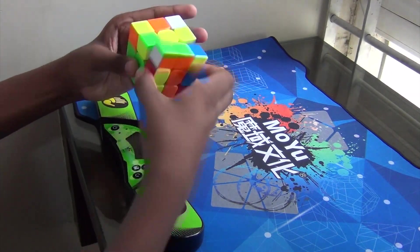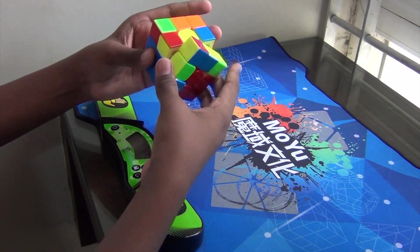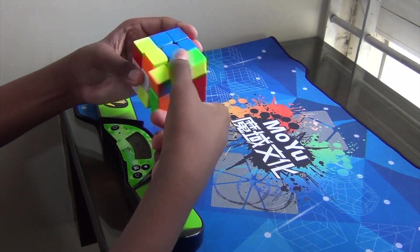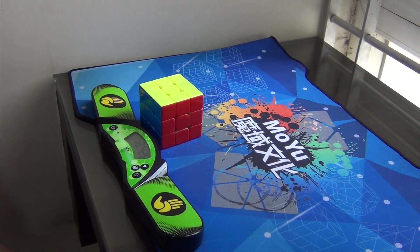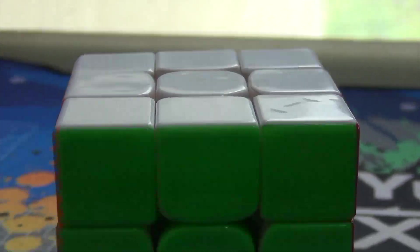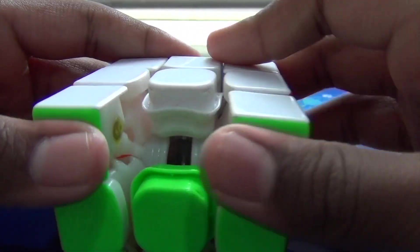For me the Tengyun has a really soft and smooth feel and feels very similar to the GAN 356X. The magnets are a little bit on the lighter side which I do prefer because it doesn't add any blockiness but keeps the cube in cube shape which is really necessary for a flexible cube like this.